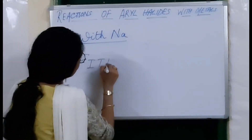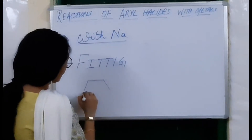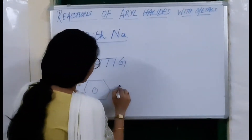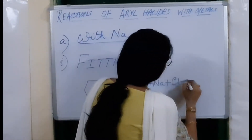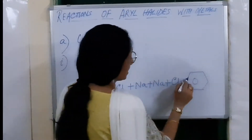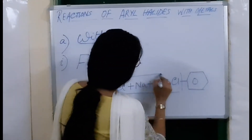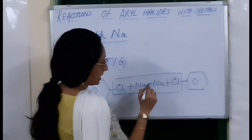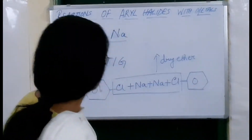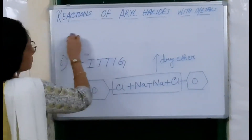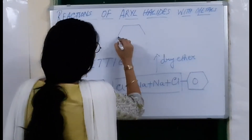The first reaction is the Fittig reaction — this is a name reaction. In the Fittig reaction, the aryl halide — let us take chlorobenzene — is heated with metallic sodium. I have taken two moles of chlorobenzene and two moles of sodium. NaCl is given out and the reaction takes place in dry ether, and the two benzene rings get connected.